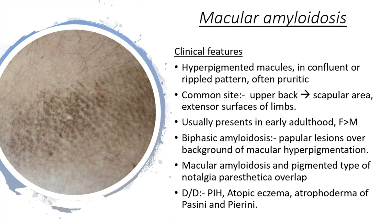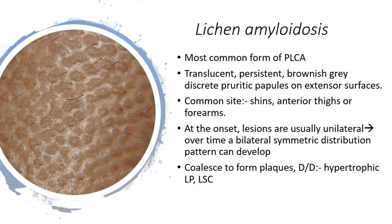Differential diagnosis of macular amyloidosis includes post-inflammatory hyperpigmentation, atopic eczema, and atrophoderma of Pasini and Pierini. Lichen amyloidosis is also one of the commonest types. It presents as translucent, persistent, brownish-grey, discrete, pruritic papules usually seen on extensor surfaces — most commonly the shins and anterior thighs or forearms. At onset the lesions are usually unilateral but over time become bilateral and may coalesce to form plaques. Differential diagnosis includes hypertrophic lichen planus or lichen simplex chronicus.